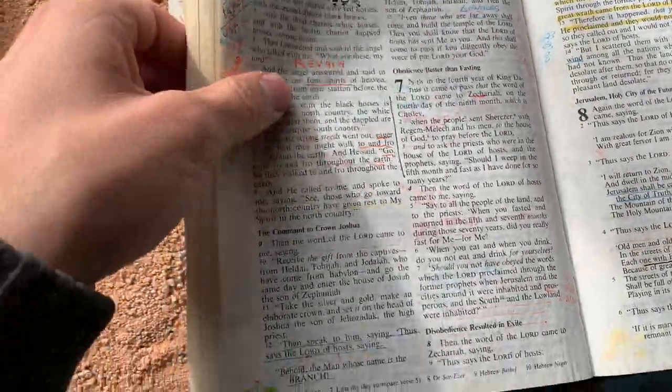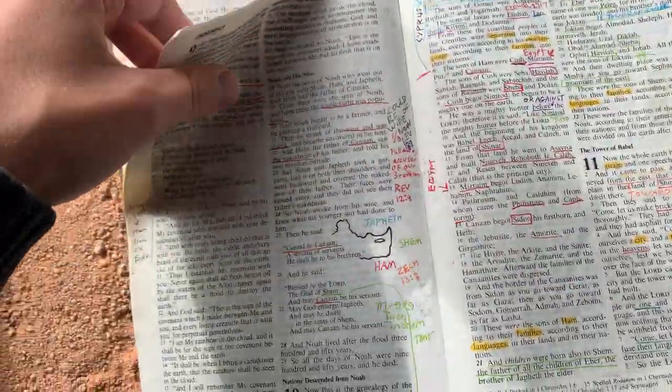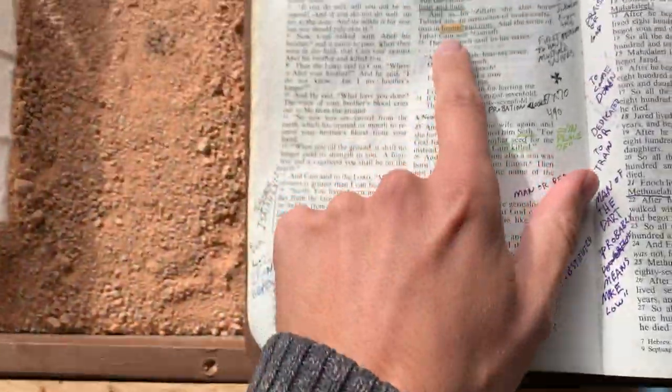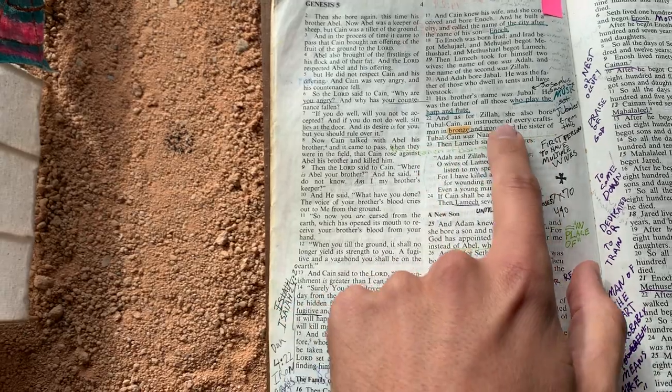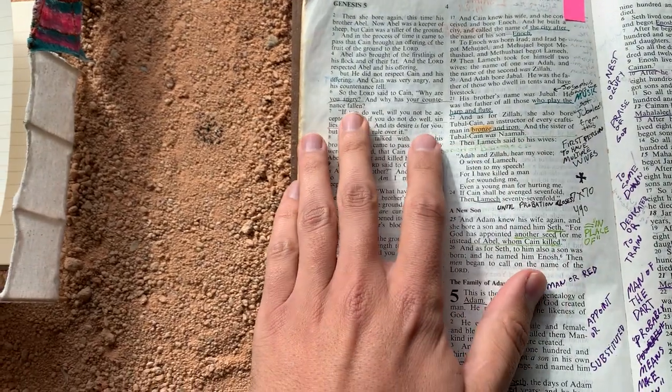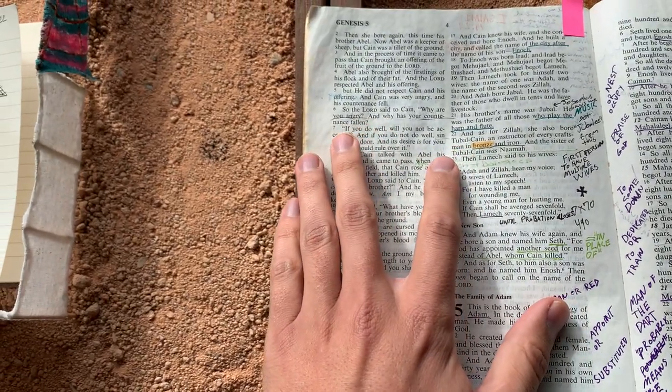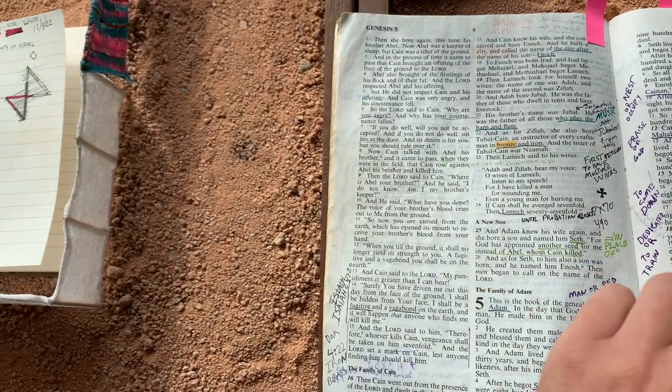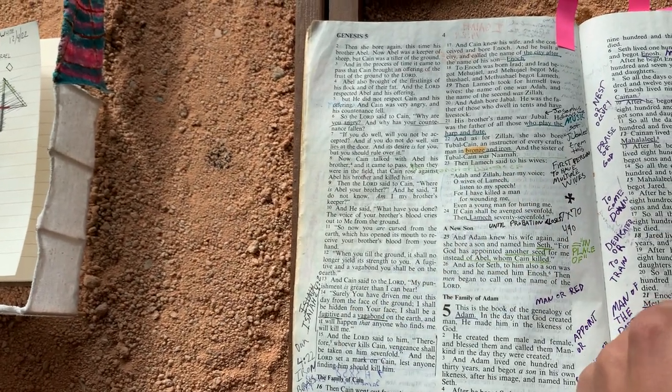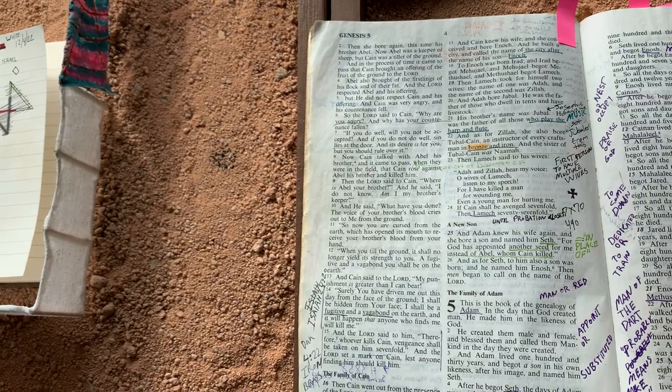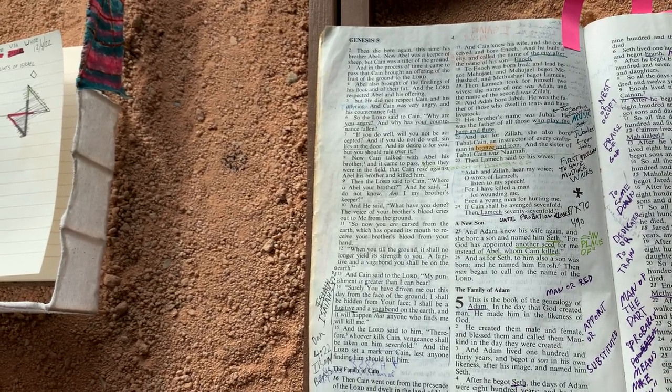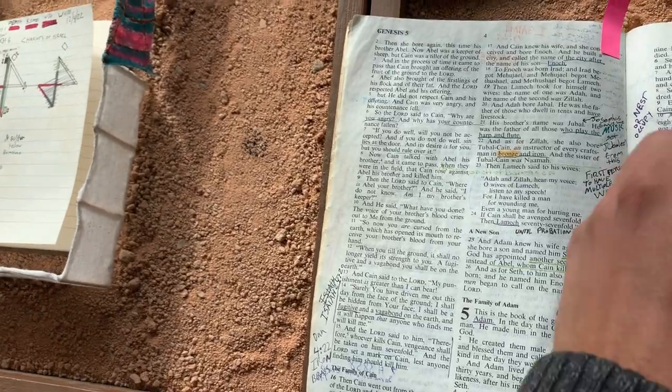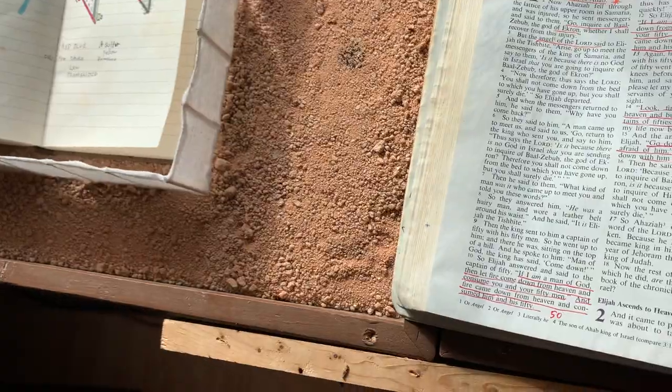I'll show you a quick reference to that as Tubalcain was the instructor of bronze and iron. And he is, in Masonic lore, Tubalcain is their guy, okay? It's the two balls and a cane, or the 007, like James Bond, right? All they have is bronze and iron, bronze and iron.